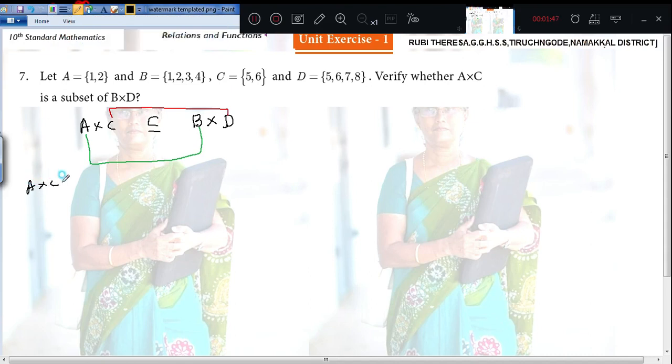Those who are unable to follow this directly, just you find out A cross C first. What is A? 1 comma 2. What is C? 5 comma 6. So very well you can write the ordered pair very fast. 1 comma 5 and 1 comma 6. Next 2 comma 5 then 2 comma 6.